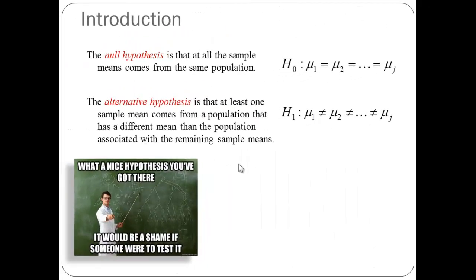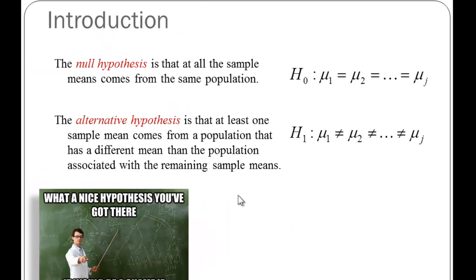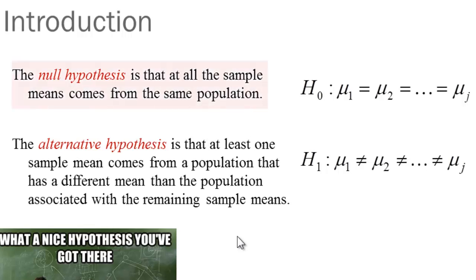Let's look quickly at our null and alternative hypothesis. Our null hypothesis is simply that all the sample means are equal to each other. That is, they're drawn from the same population. In this case, symbolically, H sub 0 is equal to mu sub 1 equals mu sub 2, and so forth.